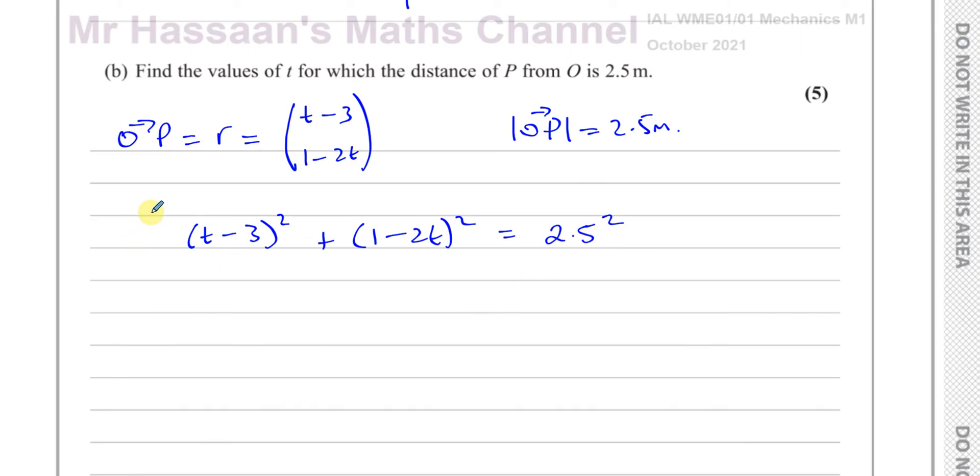So now we can expand these brackets. You have t squared minus 6t plus 9, plus 1 squared which is 1, then multiply these together and double them so minus 4t, and square the last term gives plus 4t squared. This equals 5 over 2 all squared. So t squared plus 4t squared is 5t squared, minus 6t minus 4t is minus 10t, 9 plus 1 is 10, and this is 25 over 4.